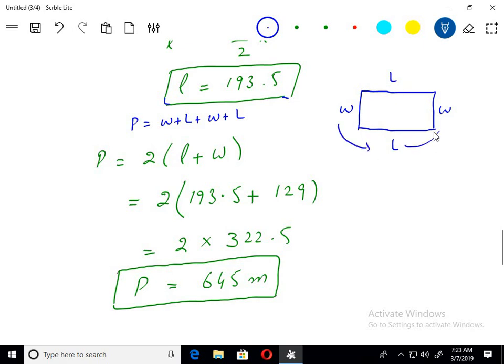Adding all the sides basically: W, L, W, L. You will get the round completed. Here we have two W's and two L's. Two can be taken as a common factor. So we have L plus W in the parenthesis and two is outside.